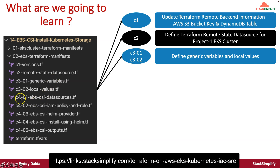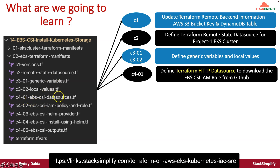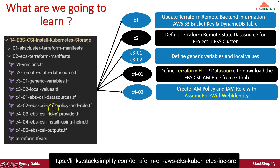The next key file is C401, the EBS CSI data source. Inside this, we use a Terraform HTTP data source. The EBS CSI IAM role related policy information is stored in the EBS CSI driver GitHub repository, and this HTTP data source will download that file for us. When you reference it in the IAM policy in C402, you can directly use that value to create the IAM policy with all the required EBS CSI permissions. After that, you create the IAM role with action AssumeRoleWithWebIdentity.